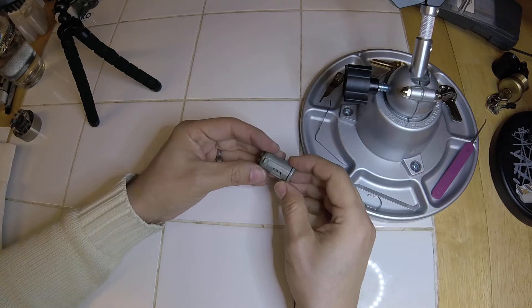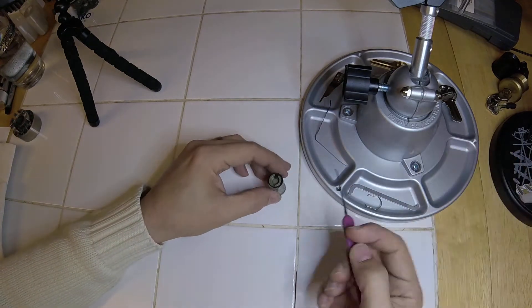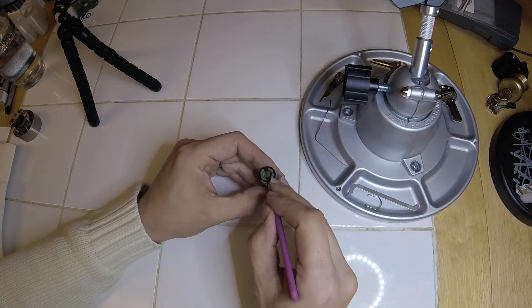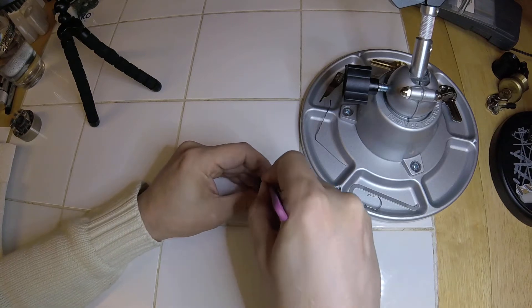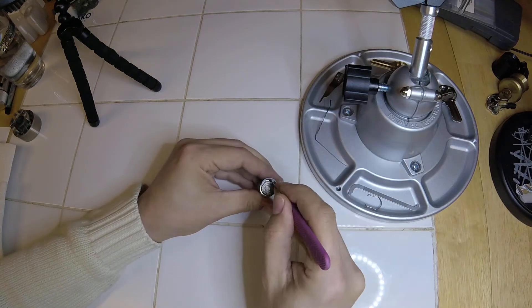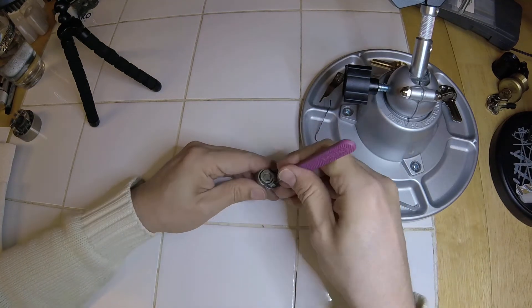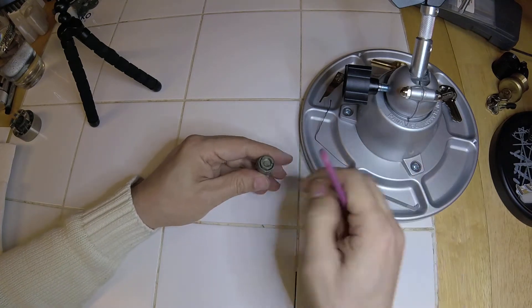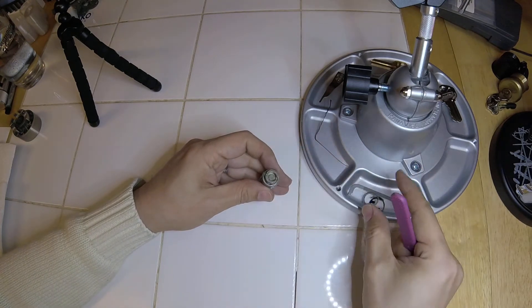So here's your core. But then to take this apart, again pretty easy. I use a pick, lift up on that C-clip there, and get it all the way off. Little ring, take that off.